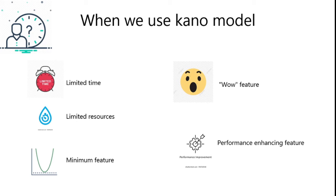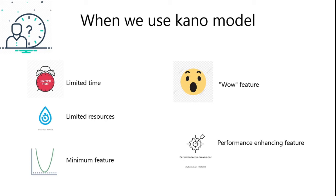We can't utilize the Kano model in all situations. We use it when we have limited time to produce the product, limited resources such as 4Ms or 5Ms, and when minimum features and minimum investment value are required. We should be aware of when to use the Kano model. It is also used when we have a wow feature — a product feature that customers will love — and when we need to improve a product whose performance feature has been reduced.